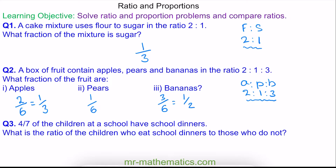For question 3, 4 sevenths of the children at a school have school dinners. What is the ratio of children who eat school dinners to those who do not? If 4 sevenths do, then 3 sevenths must not. We can simplify this by multiplying both by 7, giving the ratio 4 to 3.